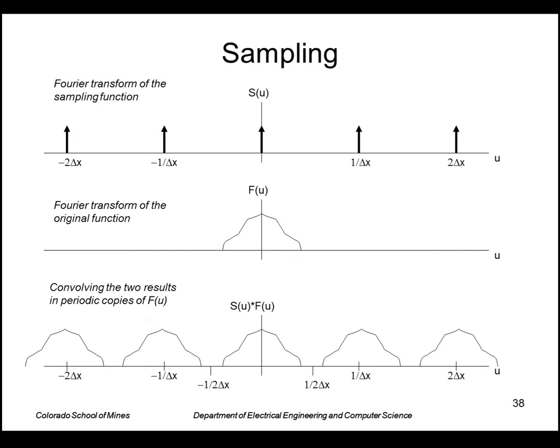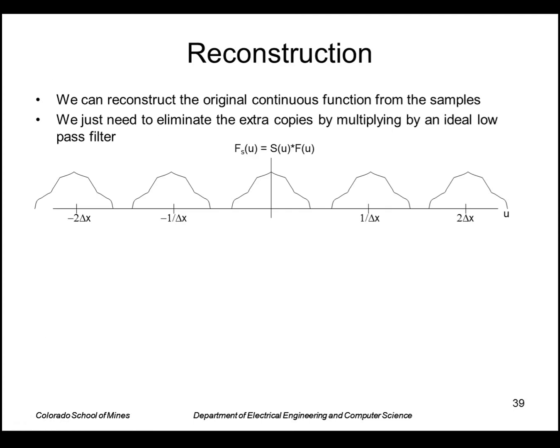Convolving these two generates periodic copies of the original image transform. So you can also think of it as just sliding this function past all these impulses and you just get back the function itself. Okay, so this is what we have effectively after we have a bunch of samples of our image.